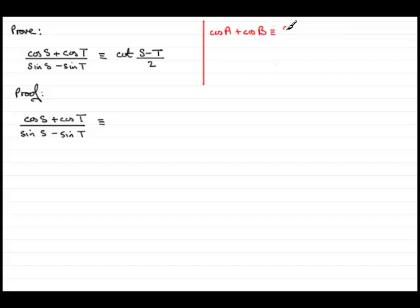then this is identical to 2 cosine of a plus b divided by 2, and it's also multiplied by the cosine of the difference between the angles, that would be a minus b, but divided by 2.